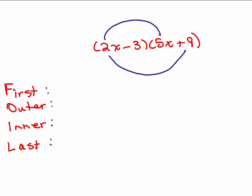FOIL stands for: First, Outer, Inner, Last. When I do the 2x times the 5x, that's the first term in each parenthesis. When I multiply the 2x times the 9, that's the outer two terms that you see — so I'm going to call this O for outer.